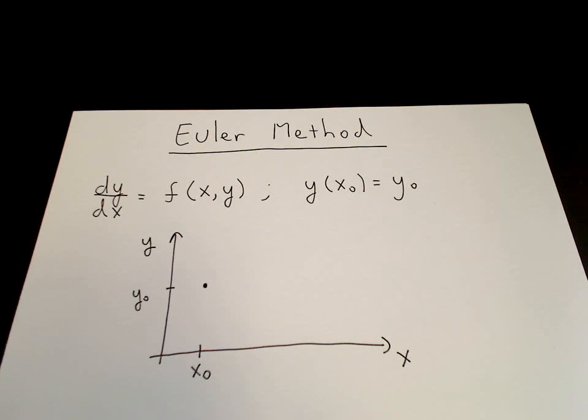So at this point we've used the initial condition. And now we need to use the differential equation. So the differential equation gives us dy/dx at that point. That's equal to f(x₀, y₀).